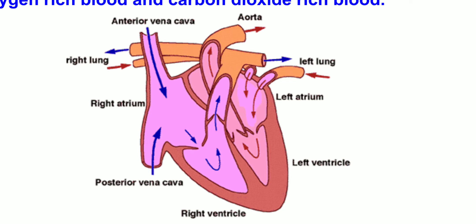The right side of the heart contains deoxygenated blood, which is received from all parts of the body. The deoxygenated blood is pumped to the lungs. In the lungs, the blood gets rid of carbon dioxide and takes in oxygen from the air inhaled into the lungs. This oxygen-rich blood is received by the heart from the lungs and is pumped to all parts of the body.